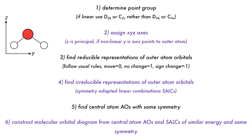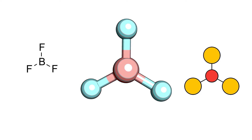From our previous video, you may remember that we started solving molecular orbital problems using a six-step process involving determining point groups, assigning axes, finding reducible and irreducible representations of group orbitals, which were then combined with the central atom atomic orbitals of the same symmetry to obtain the full molecular orbital diagram. Now we are going to consider non-trivial examples, with boron trifluoride BF3 being a good example because it is planar and has more than two atoms in its group orbitals.